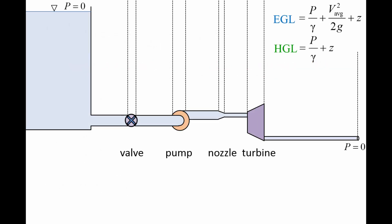Here is an example of how the energy grade line and hydraulic grade line can help us visualize how the mechanical energy in a fluid changes as the fluid flows through various devices. On the left, we have a large reservoir that is connected to a pipe system.